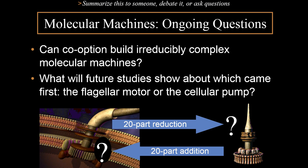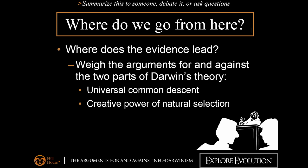This week we focused on natural selection and just how much change it can produce. Remember, there are two main claims in Darwin's theory: first, that all life descended from one universal common ancestor — that's what we'll look at next week as we evaluate evidence like fossils and homology. This week we asked: what is natural selection, how much change can it produce, and what is its creative power?